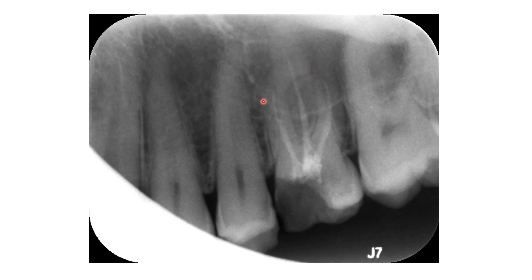This is the root configuration — this is the gutta-percha which is present here; it is actually underfilled. Now for the distobuccal root, don't start at the apex — you will be misled. Go from the alveolar crest upwards, upwards, upwards. This is the root — can you see it over here? This is the root of the tooth, or the apex.